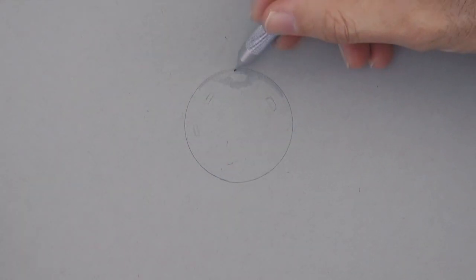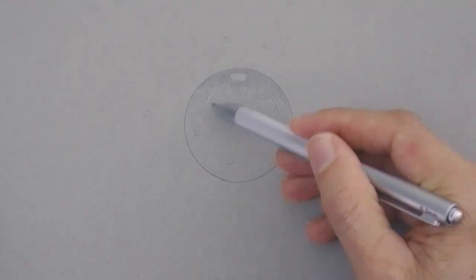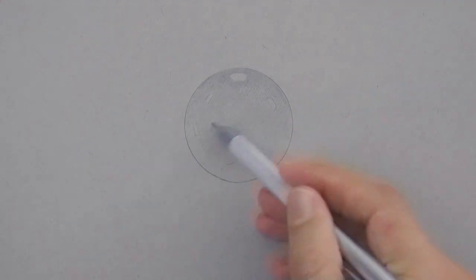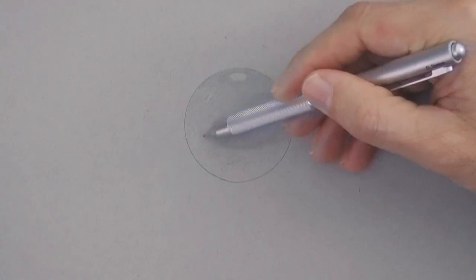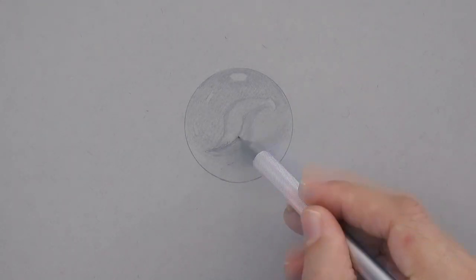As I said, this area facing the light source will be darker but not too dark since it is transparent and it lightens as it goes lower. Some marbles have a nice shape inside made by twisted paint, so let's draw that.